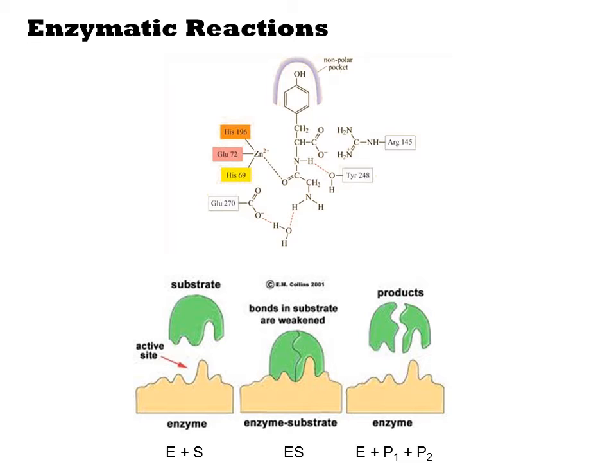Here a zinc atom is held by a triplet of residues and is used as a Lewis acid to activate the amide in the substrate. Other regions of the active site include a non-polar pocket at top, in purple, showing regions of interactions that help bind and recognize the substrate.